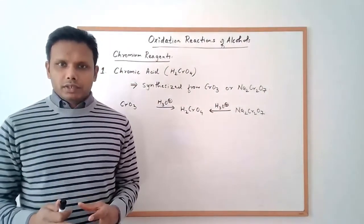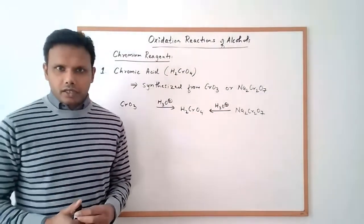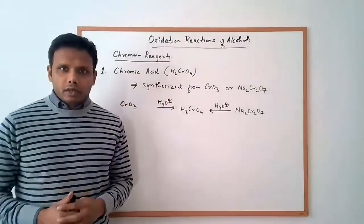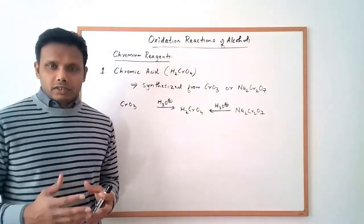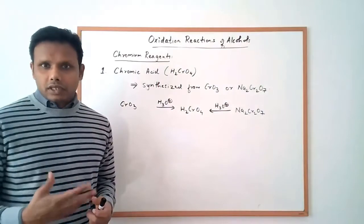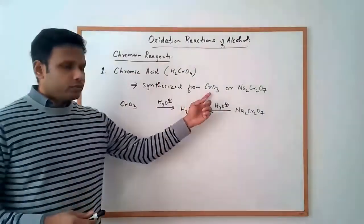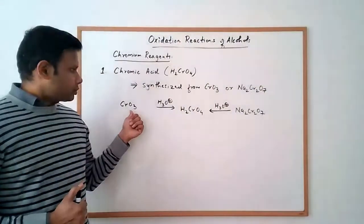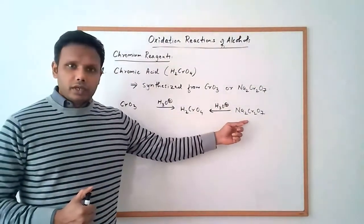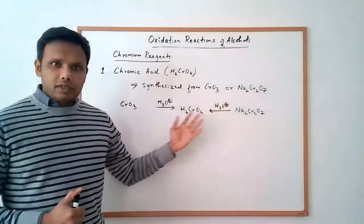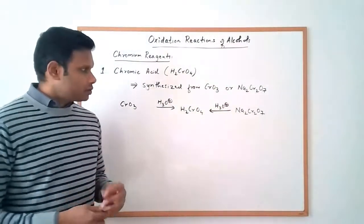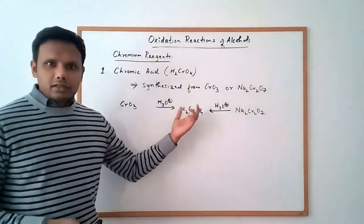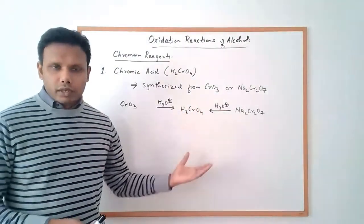One of the more traditional classic chromium reagents used is chromic acid, H2CrO4. Chromic acid can be synthesized in situ from chromium trioxide or sodium dichromate. When chromium trioxide or sodium dichromate is treated with aqueous acid — such as sulfuric acid with water — they generate chromic acid.